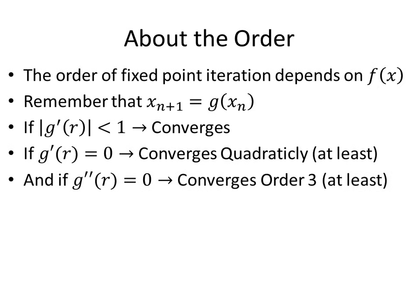And if we take the derivative of g' to find g'', if that is also equal to 0 at r, then the function will converge with order 3, and the pattern continues. So if g''' at r is also equal to 0, then it will converge with order 4, and so on and so forth.